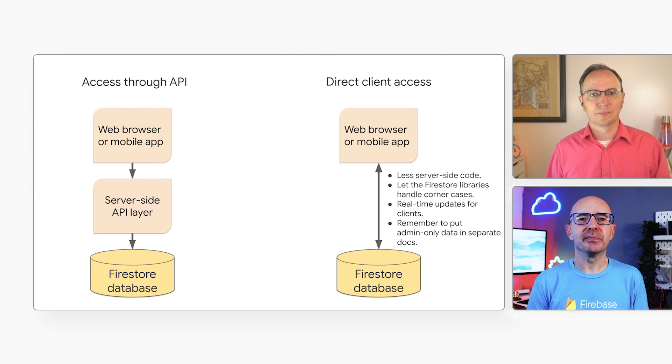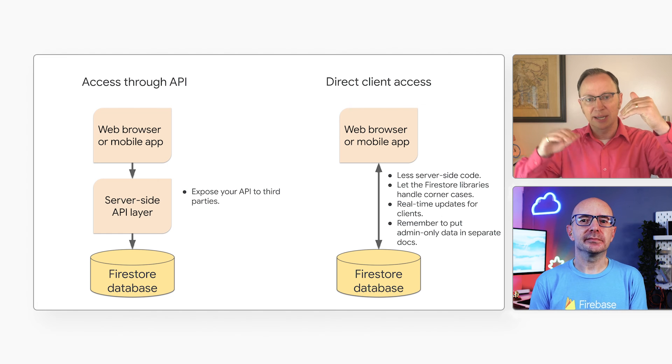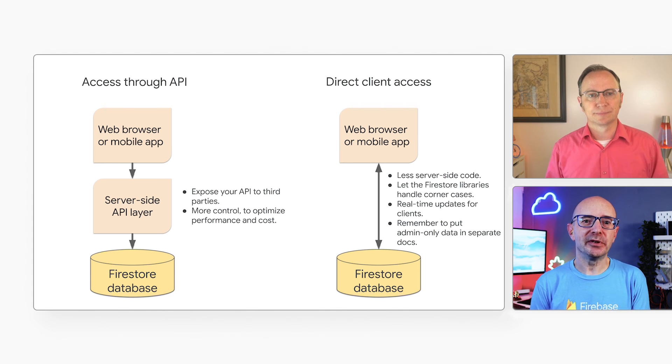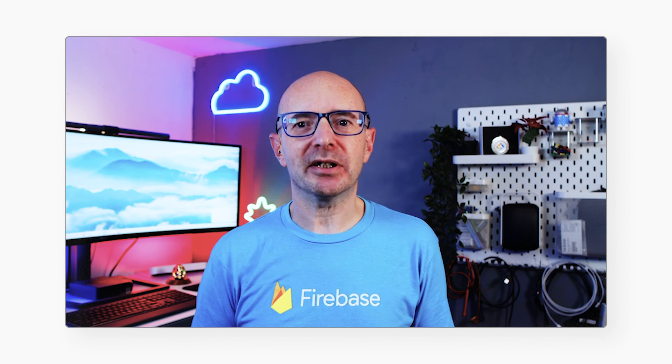Direct client access sounds pretty great. Do you use it in all your applications, Jason? Yes, but not for all use cases. In our example, we were able to restrict client access using Firestore security rules. But let's say we want to expose this data to a third-party application with a custom data model. For that, we can create a server-side API, which will bundle this data into a single response. By providing that API layer, you make sure that both your client apps and third parties can call it. With an API layer, it's also easier to optimize performance and cost. You can remap the data model to suit your needs, perform simple aggregations, or even combine it with data from other sources. But there's nothing to stop you using a mix of direct client access and API access in the same application.